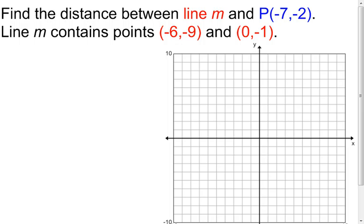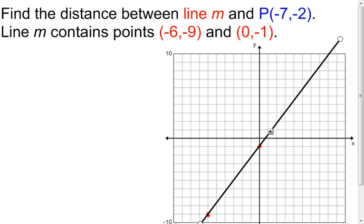We're trying to find the distance between line M and point P. It tells me two points on my line: negative 6, negative 9 is on my line, and 0, negative 1 is on my line. I'm going to plot those two points. There's the negative 6, negative 9, and there's the 0, negative 1. I'm going to make my line go through those two points, extend it out so I have more to work with.